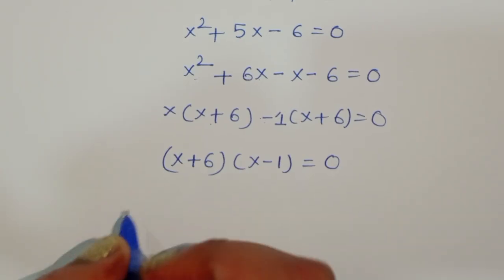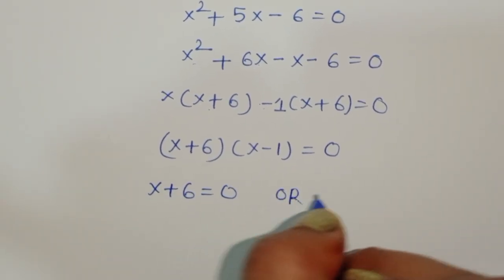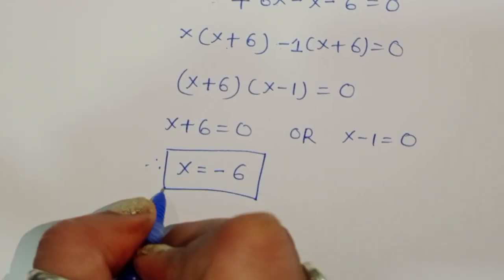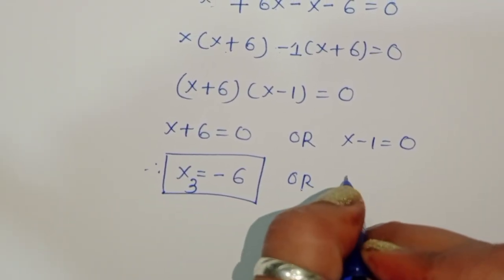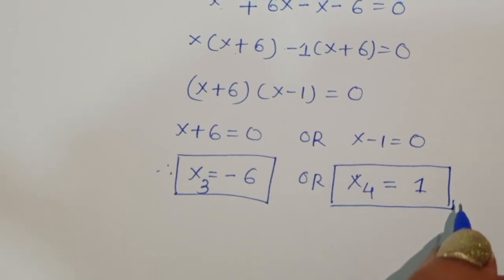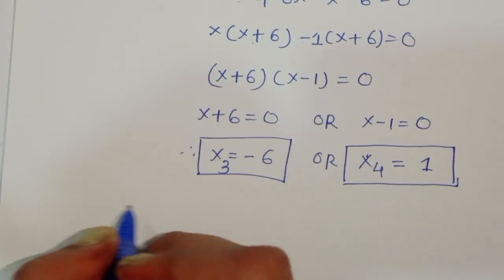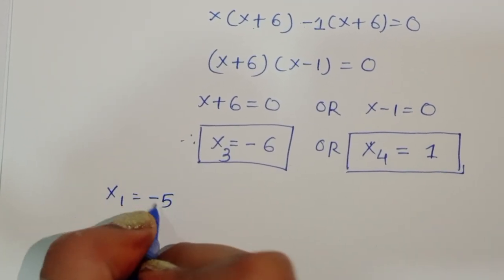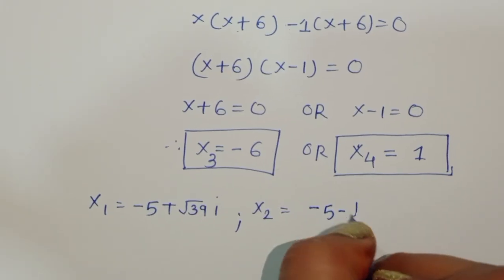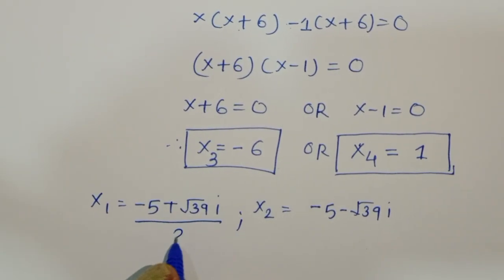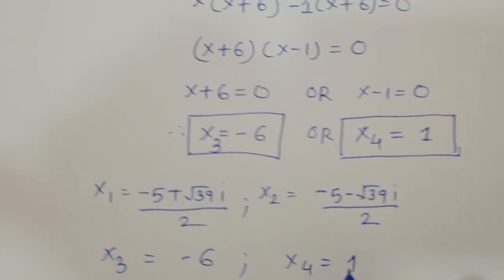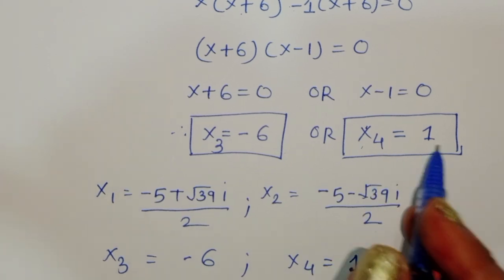From (x + 6)(x - 1) = 0, we get x + 6 = 0 or x - 1 = 0. Therefore x₃ = -6 and x₄ = 1. In total we have four values: x₁, x₂ (imaginary), x₃ = -6, and x₄ = 1.